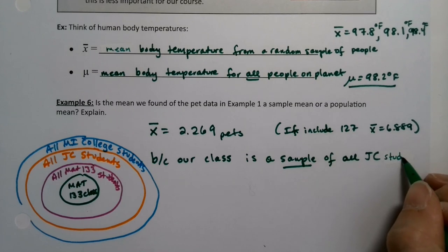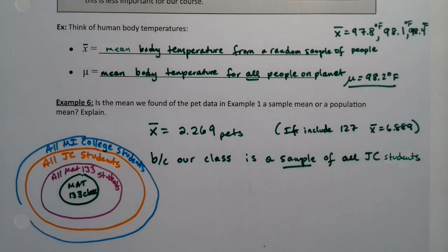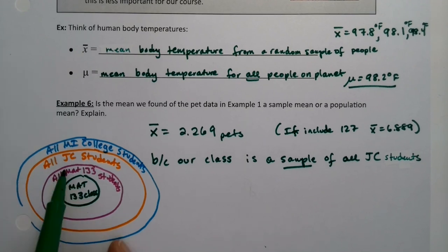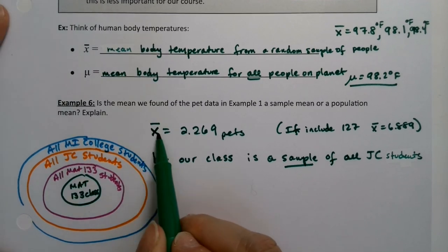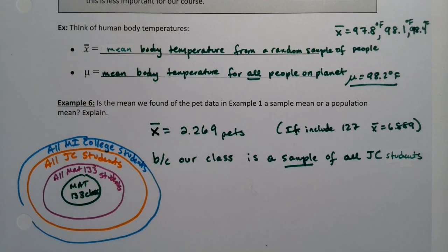So we could just say all JC students. Or if you prefer, you can say math 133 students. That's perfectly fine. But one way or another, it's a sample of those two things. Which is why this has to be an x bar, not a mu. A mu would be the average number of pets for all college students or all Jackson college students or something like that, which we do not know. We didn't pull all college students or all Jackson college students or math 133 students for that matter.